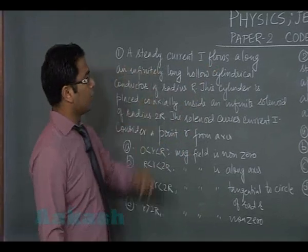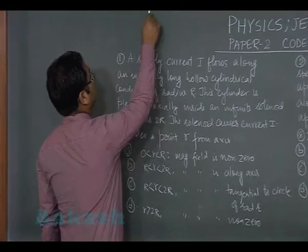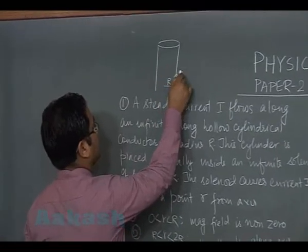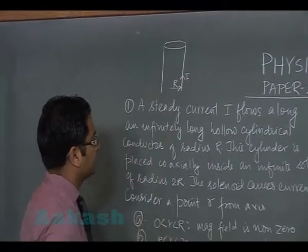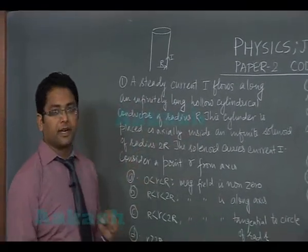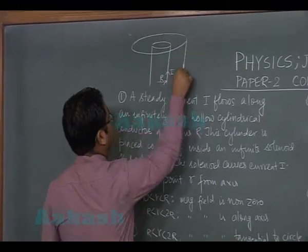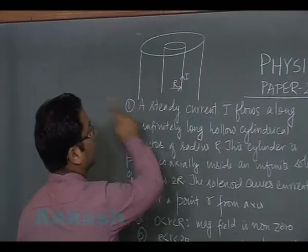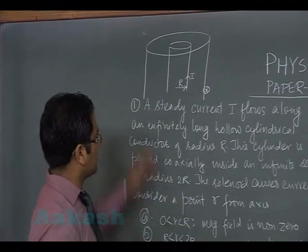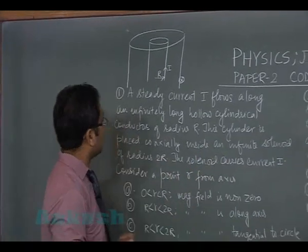So here is an infinitely long cylindrical conductor of radius r, with current I flowing in this direction. This cylinder is placed coaxially inside an infinite solenoid of radius 2r. Let me draw the infinitely long solenoid. Since it's a solenoid, the current is going circumferentially - the current direction I'll show by cross here and dot there. The solenoid carries current I, which is the same current.